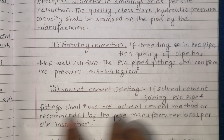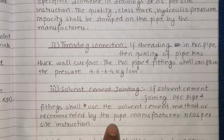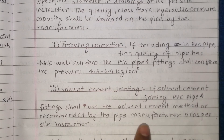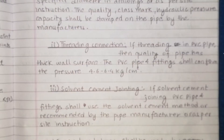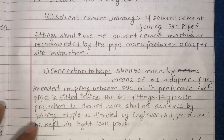The PVC pipe fittings shall be joined using the solvent cement method as recommended by the PVC pipe manufacturer or as per site instruction. The solvent cement method will be used in the pipe zone as directed.